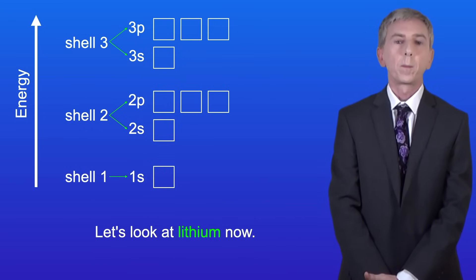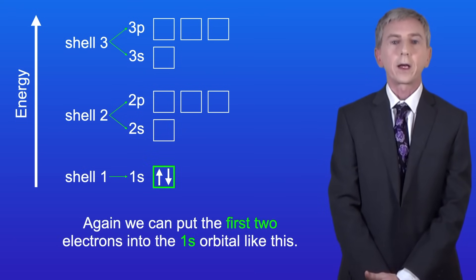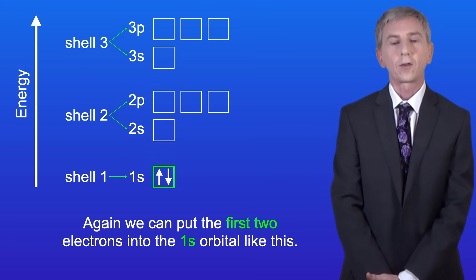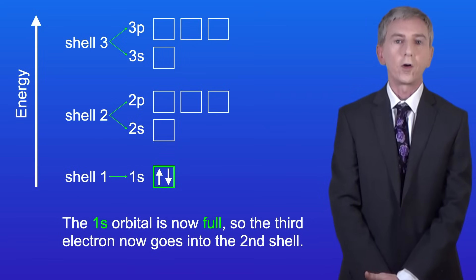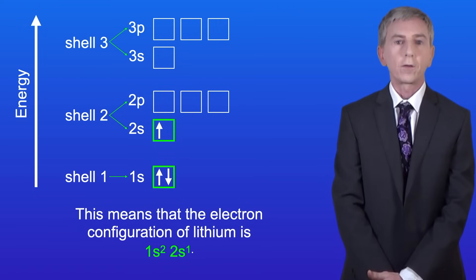Okay, let's look at lithium now. Lithium has three electrons. Again, we can put the first two electrons into the 1s orbital like this. The 1s orbital is now full, so the third electron now goes into the second shell. The lowest energy orbital in the second shell is the 2s orbital, so that's where the electron goes. This means that the electron configuration of lithium is 1s2, 2s1.